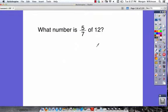What number is 5 7ths of 12? Now, in order to solve this problem, what number, we're going to call what number WN, for an abbreviation. Is, is means equal to.